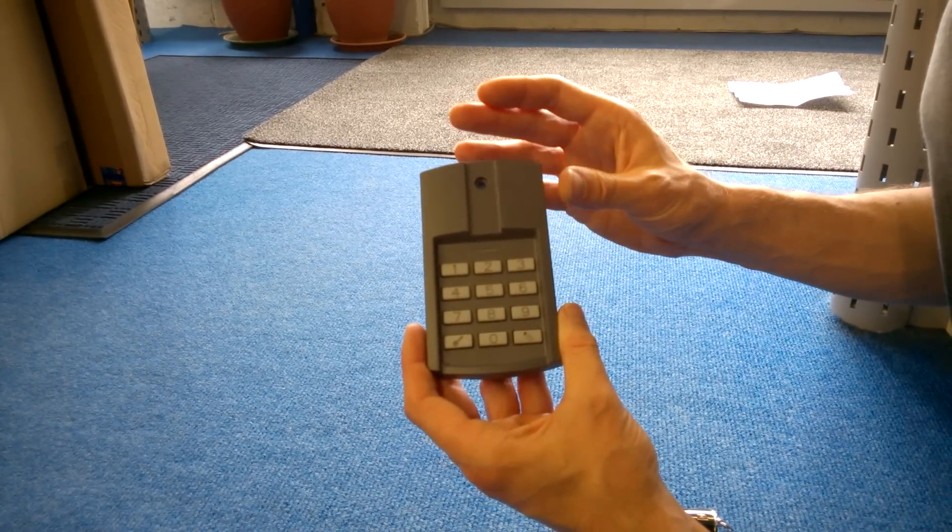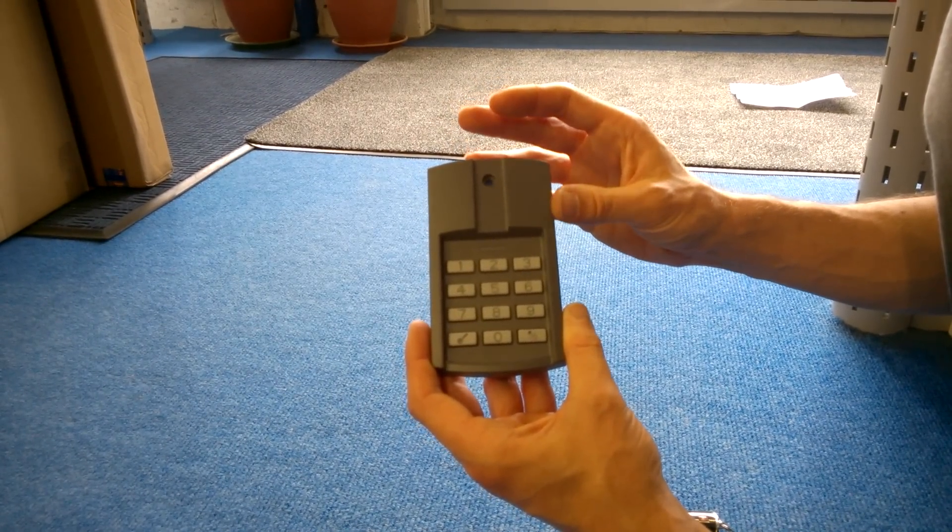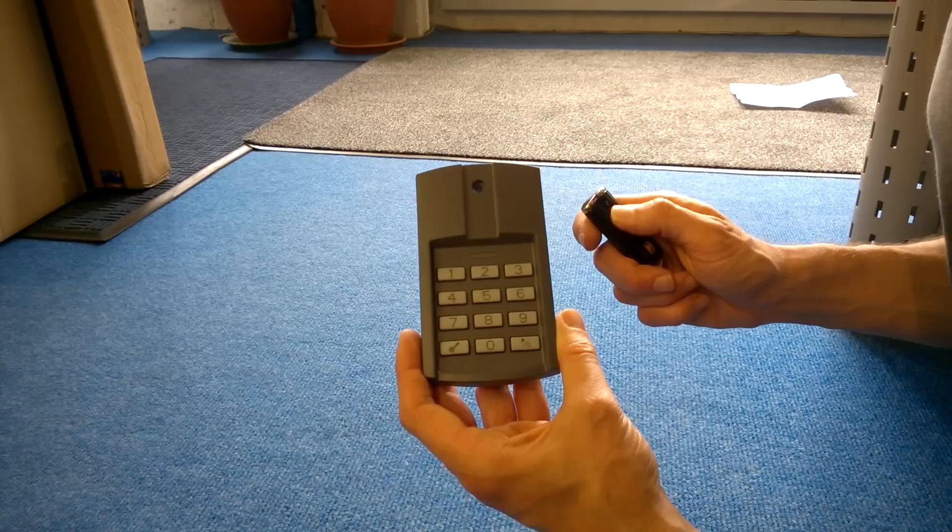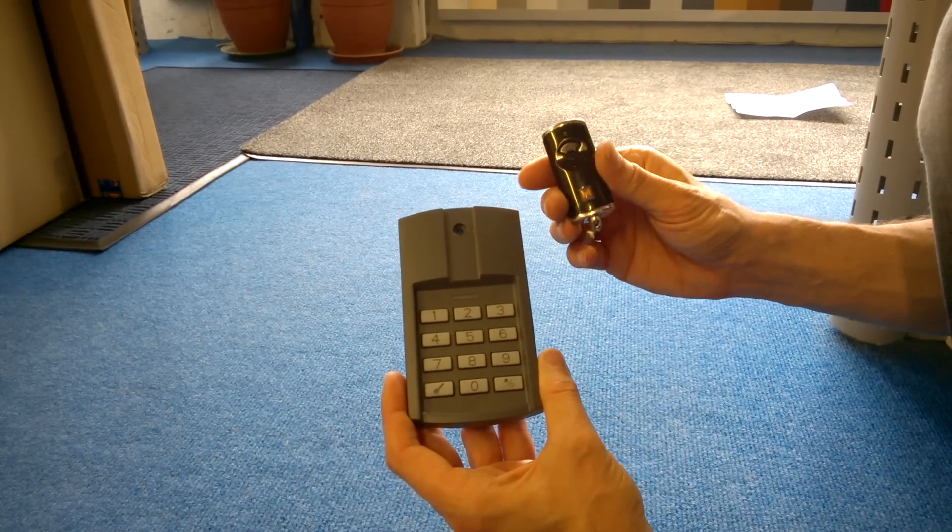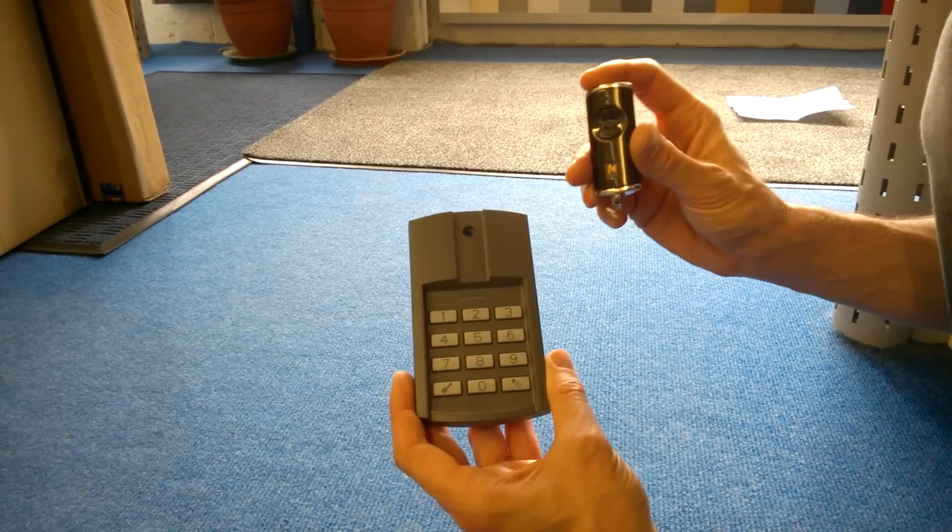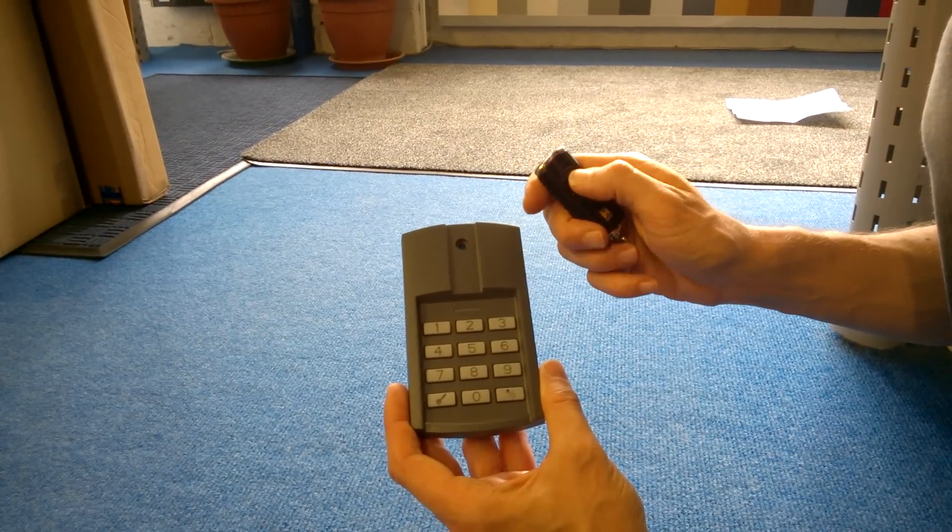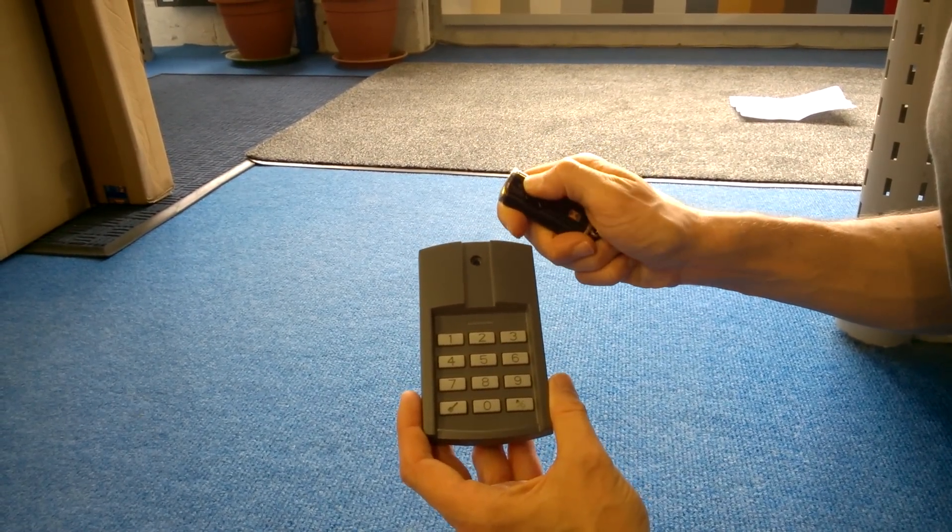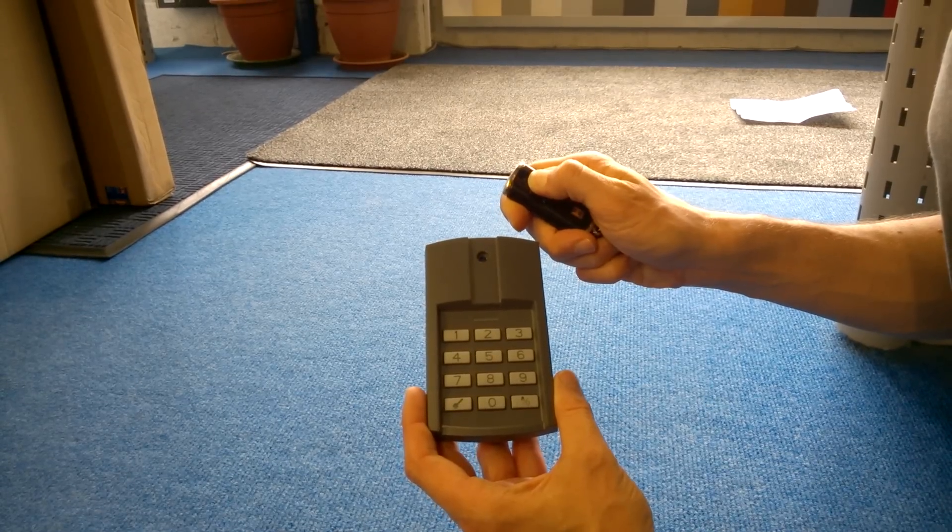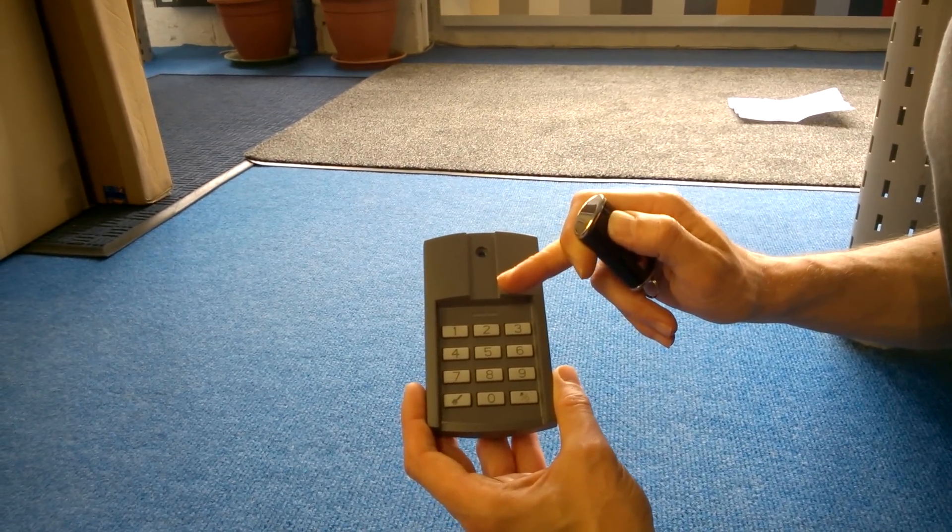So what we now need to do is code our hand transmitter into that memory space. Now the key to this is timing, because you have to hold the hand transmitter button down until the light starts to flash red and blue, and then that will accept the code from it.